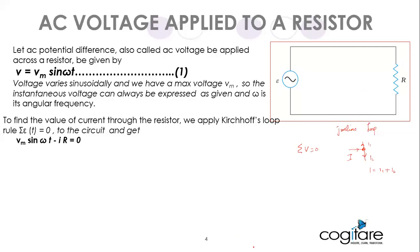The voltage across the source changes with time and is given by Vm·sin(ωt). Applying the loop rule: Vm·sin(ωt) minus iR equals zero. In DC circuits, we used V minus iR equals zero, where iR is the potential drop across the resistor. Here, instead of a static V, we use Vm·sin(ωt) because it changes continuously with time.